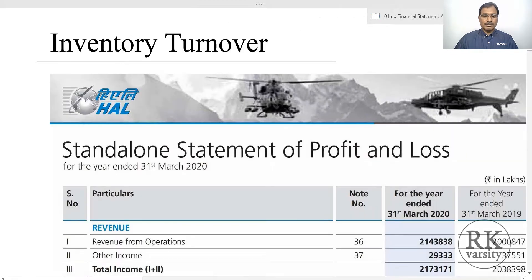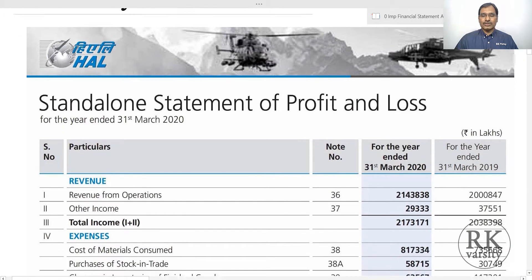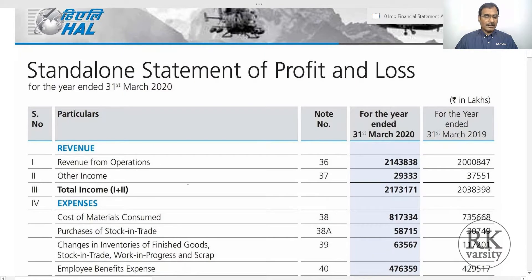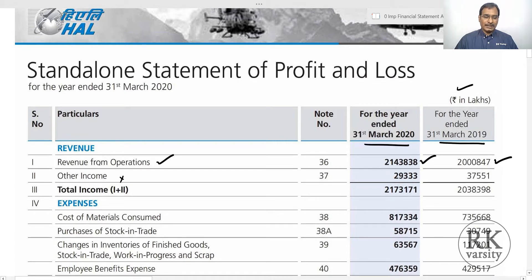Using the statement of profit and loss account and balance sheet of Hindustan Aeronauticals Limited — a defense products manufacturing company in India that does research and development and develops aeronautical and defense-related equipment for the country's defense forces — here is the standalone statement of profit and loss. From the profit and loss account, you find total income. We ignore other income and consider only revenue from operations, as that represents net sales. All amounts are in rupees lakhs, for the two years 2019 and 2020.